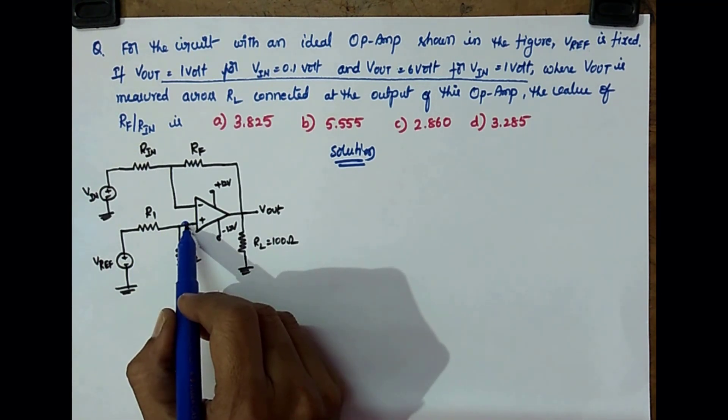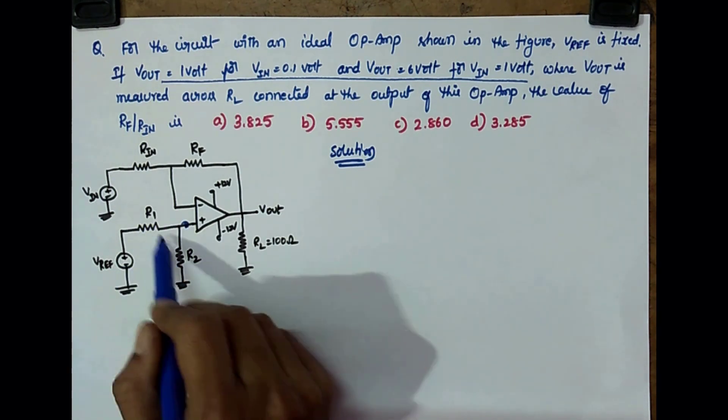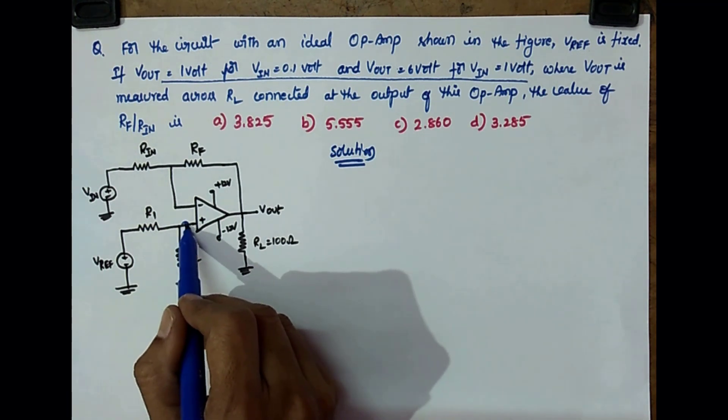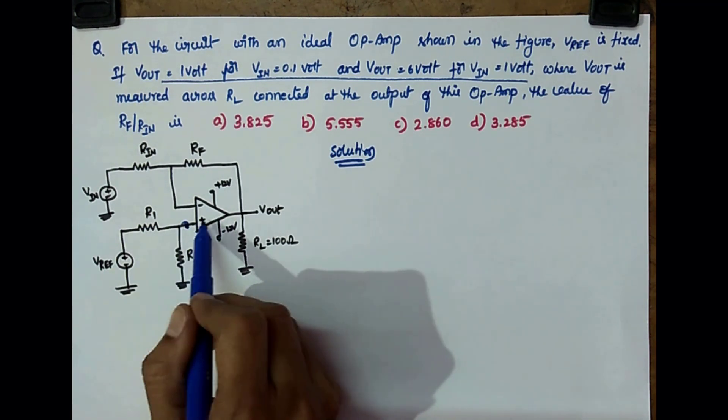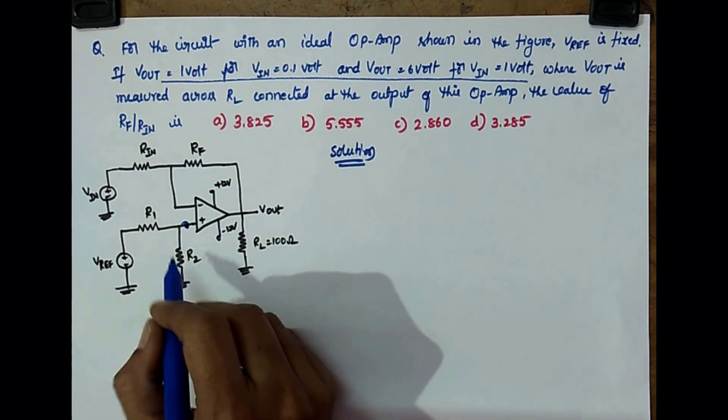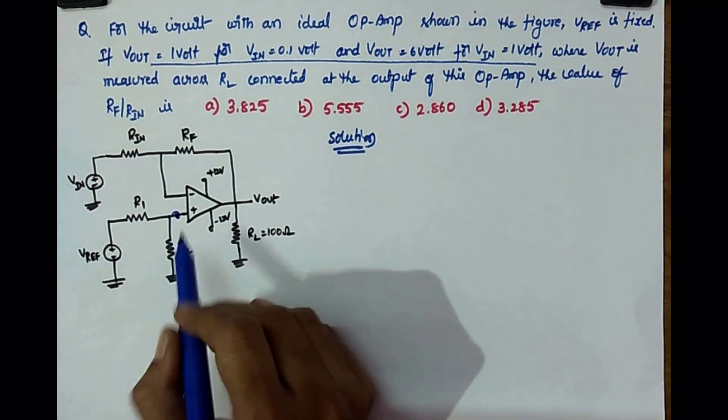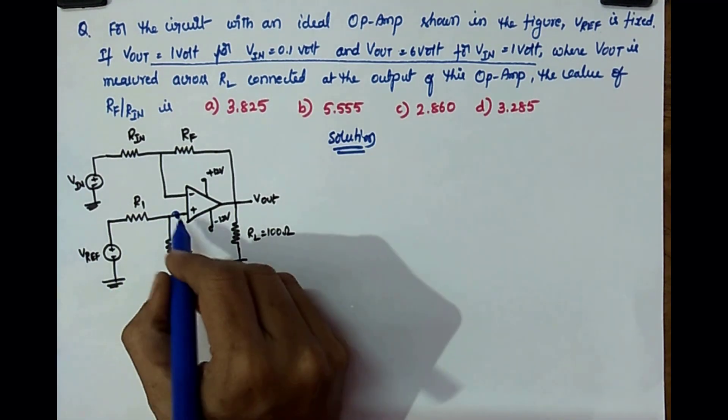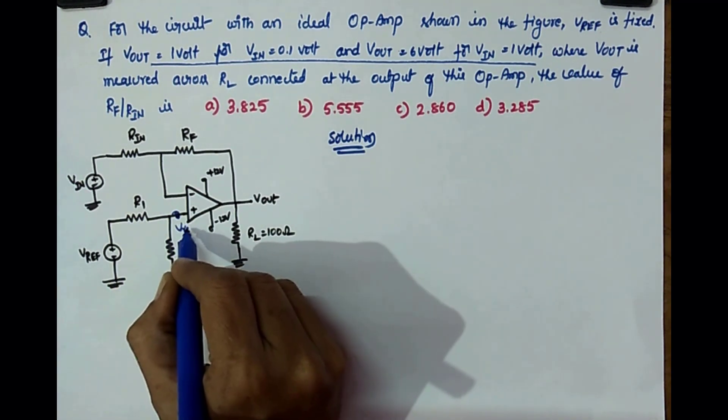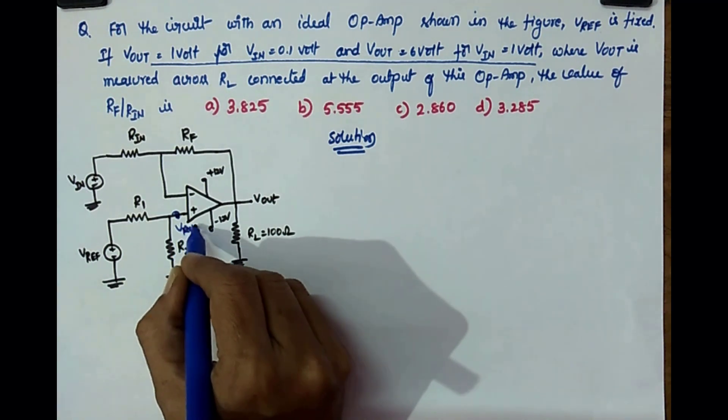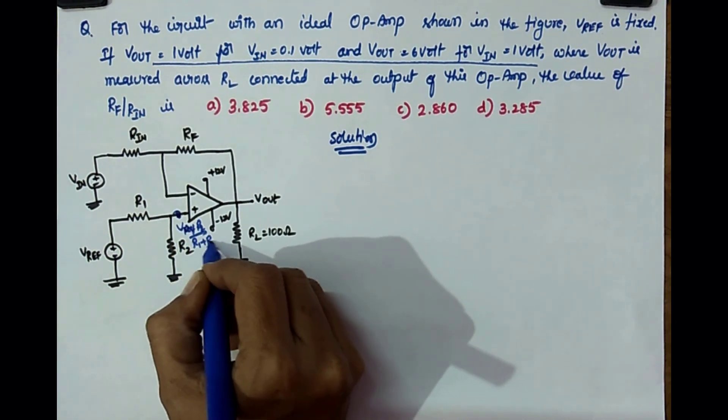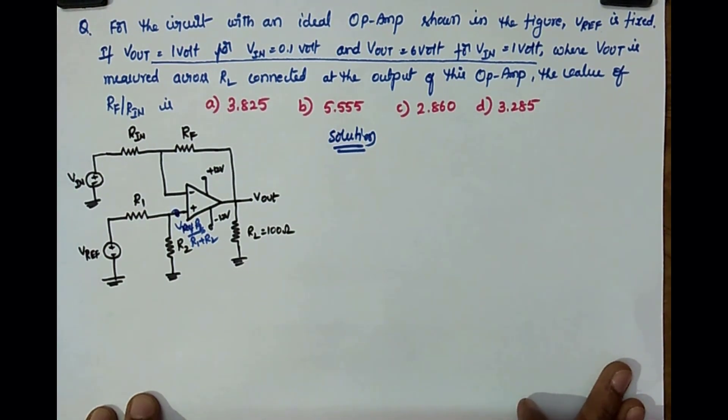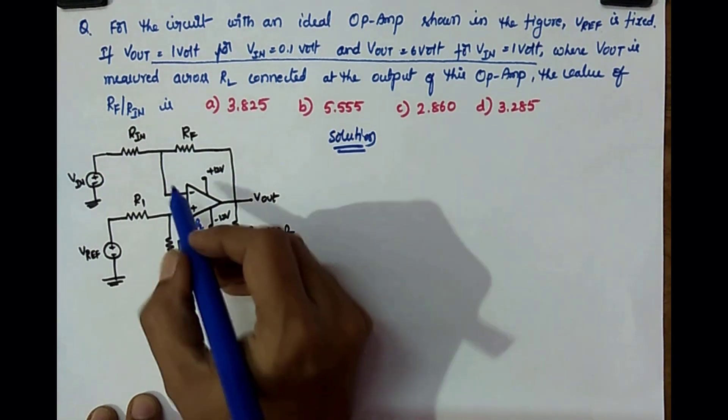What is the value here? V reference is divided across R1 and R2. R1 and R2 are in series. So now the voltage across R2 is nothing but the voltage here, the voltage at the non-inverting terminal. What is this? V reference into R2 by R1 plus R2, because it is the series circuit. So what is the voltage here? V reference into R2 by R1 plus R2. The same voltage present here.